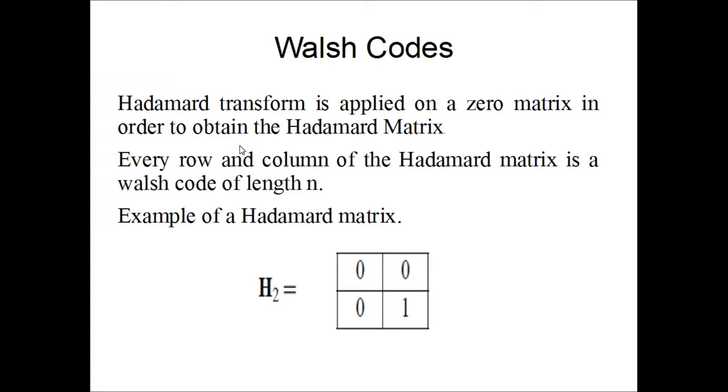This is an example of how a Hadamard matrix looks like. Combining the first row, 00, it's a Walsh code. And the second row, 01, it's a Walsh code. And they are two distinct and orthogonal to each other.